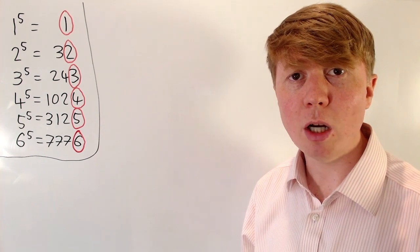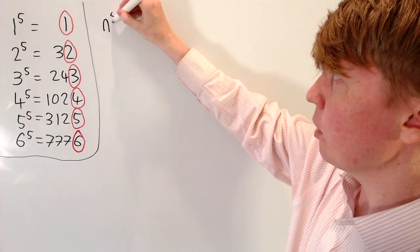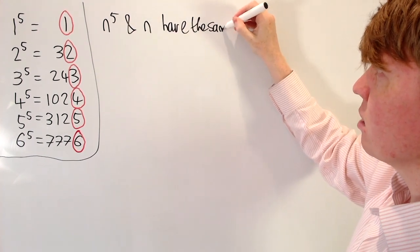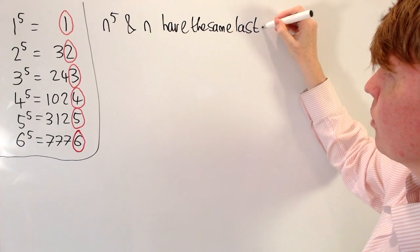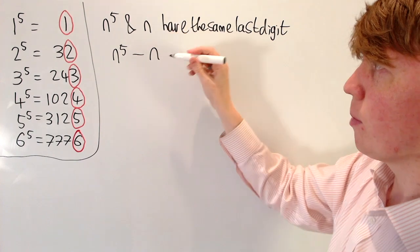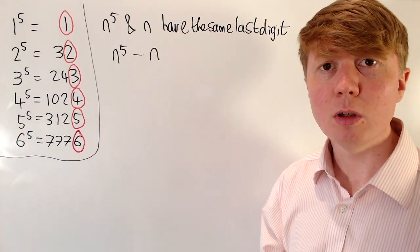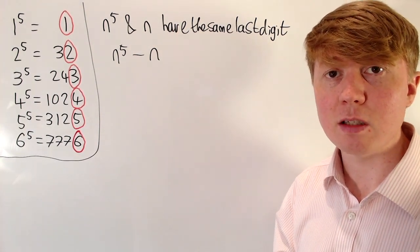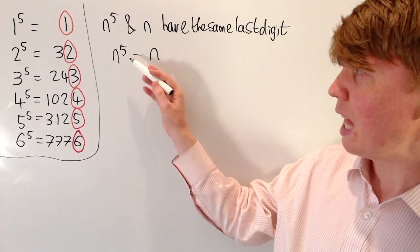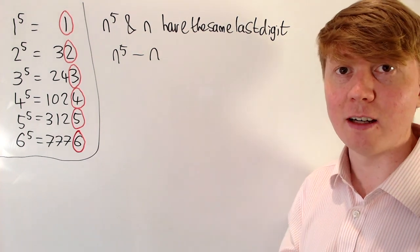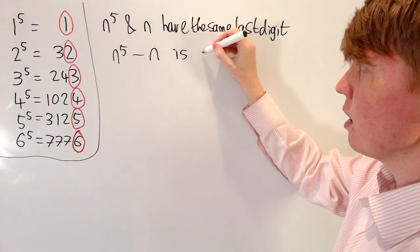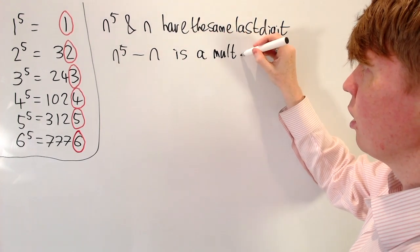So what we're actually trying to show is that n to the power of 5 and n always have the same last digit. So you could think about if they've got the same last digit, what happens when you take away n from n to the power of 5? Well, the last digits are the same, so they would cancel out. So this would end in 0. So what we're effectively trying to show then is that n to the power of 5 minus n ends in 0, or equivalently, we want to show that this is a multiple of 10.